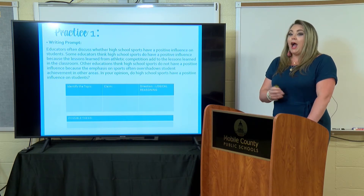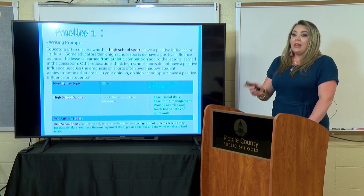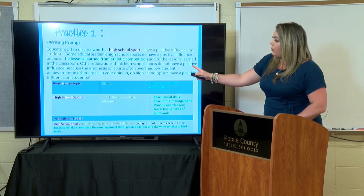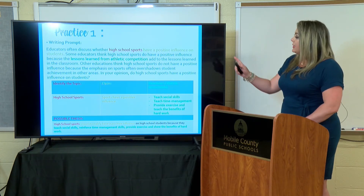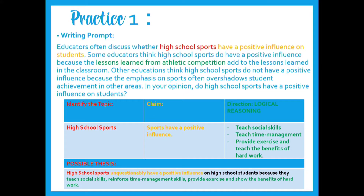Now, as you're thinking about that, I'm going to show you what I've modeled ahead of time. In this writing prompt, let's talk about our first step: identify the topic. Well, what is the topic? It's stated in the first sentence — it's high school sports. Now, we need to make a claim. Here it says that sports have a positive influence. You could argue that either they do or they do not have a positive influence — that is your choice. I have argued that yes, sports have a positive influence on students because personally I think I have more to write about on that topic and can develop stronger points.